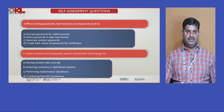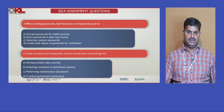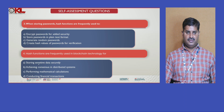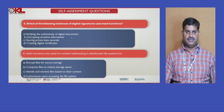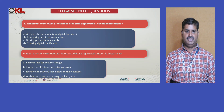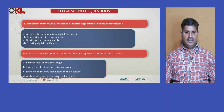The third question: when storing passwords, hash functions are frequently used to generate random passwords or to create hash values of passwords for verification. The correct answer is to create hash values of passwords for verification. The fourth question: hash functions are frequently used in blockchain technology for storing sensitive data securely. For digital signatures, hash functions are used for creating digital certificates. Hash functions are also used for content addressing in distributed file systems to compress files, reduce storage space, and verify integrity.